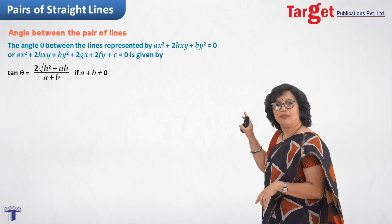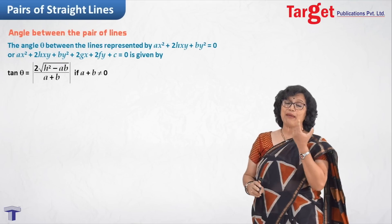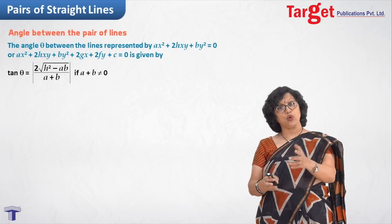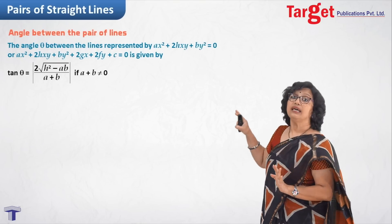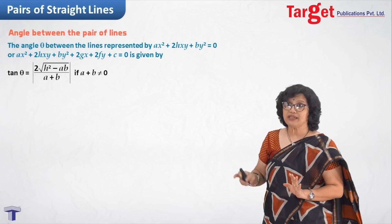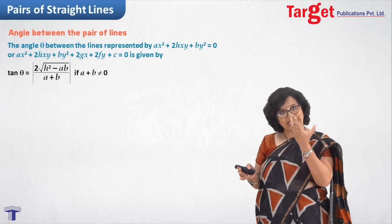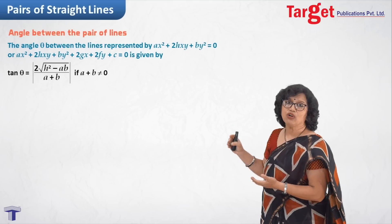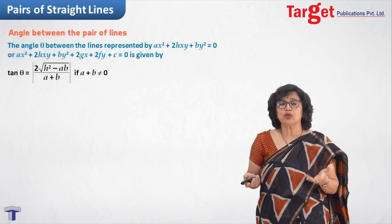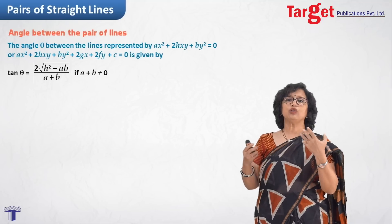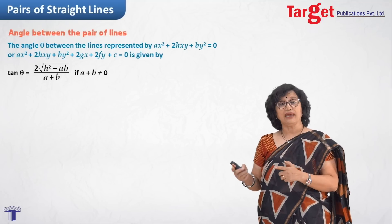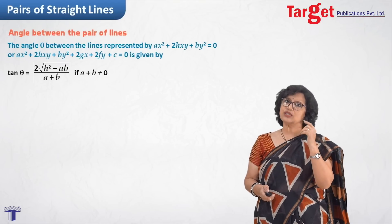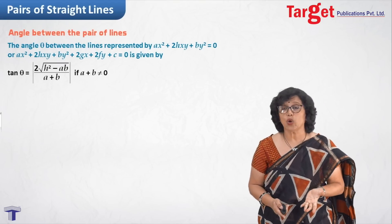2√(h²-ab) divided by (a+b) — here a+b appears in the denominator. From this, certain conclusions can be drawn. For getting the value of tan θ, we need a+b ≠ 0. But if a+b = 0, you will not be able to find tan θ, which implies the lines must be perpendicular.